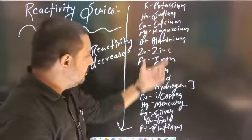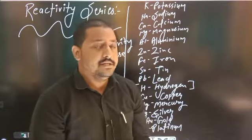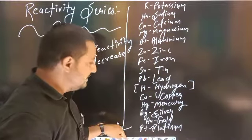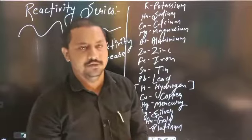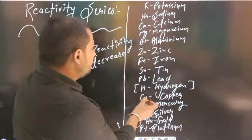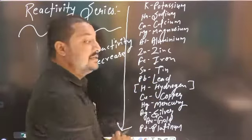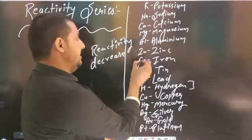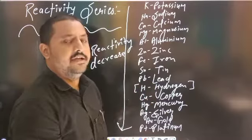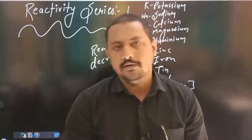Reactivity series is a table of elements in which they are arranged in the decreasing order of reactivity. Jab aap oopar se niche ki or jaayenge, to reactivity decrease hogi. So aap dekhiye — copper jo hai woh zinc ko displace nahi kar sakta, copper iron ko displace nahi kar sakta. Lekin dekhiye, zinc copper ko displace kar sakta hai, iron copper ko displace kar sakta hai, because they are higher reactive than copper.